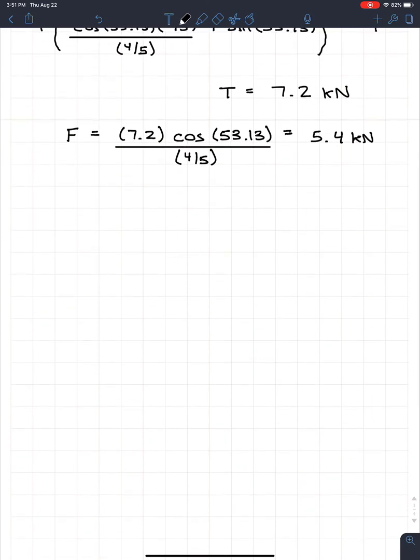Now we have both of our answers. The final thing we have to do is make our nice statement. T equals 7.2 kilonewtons and F equals 5.4 kilonewtons. It's nice to put a box around it so everybody knows what exactly to mark, and that's it.